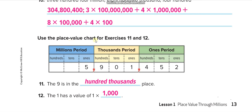Use the place value chart for exercises 11 and 12. The 9 is in the blank place — looking at the chart, the 9 is in the hundred-thousands place. The 1 has a value of 1 times its place value, which is 1,000, so 1 times 1,000.